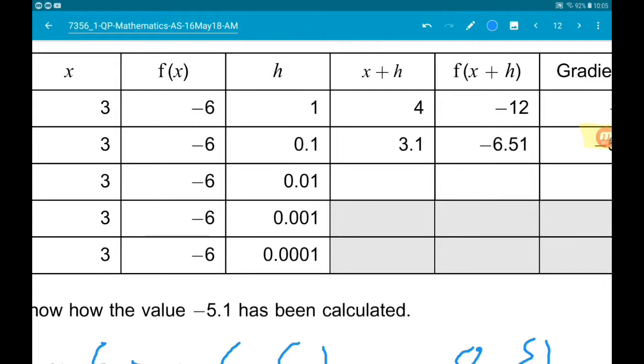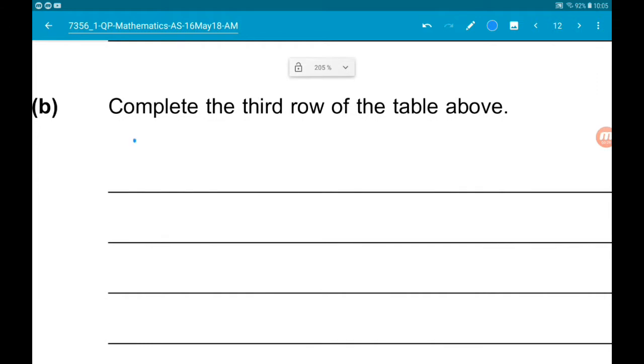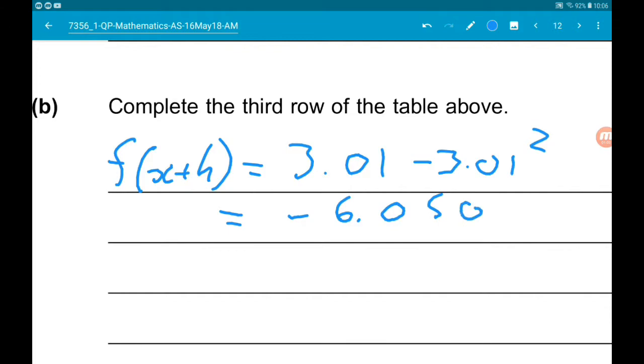X plus h is going to be 3.01. F(x+h) is 3.01 minus 3.01 squared. We're just substituting x = 3.01 into the function, and that's going to give us -6.0501.